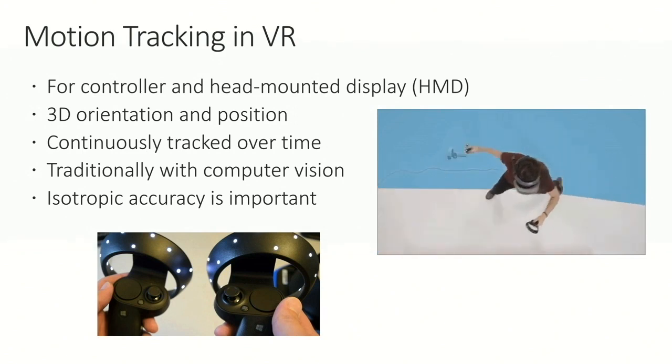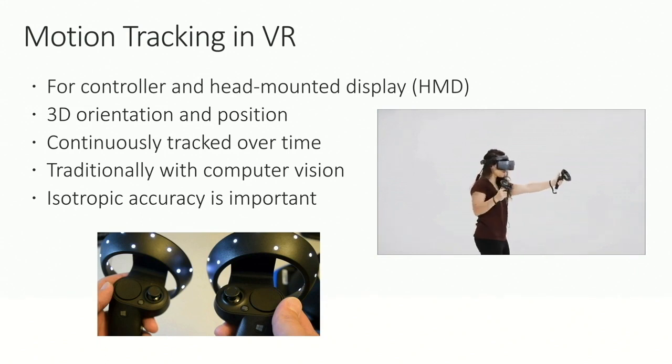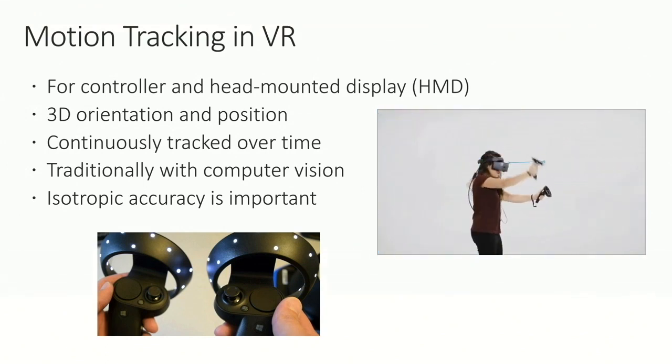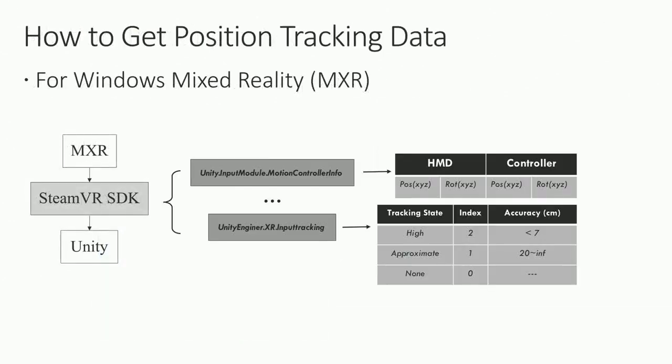Isotropic accuracy is very important. The traditional way to track those devices is based on computer vision, simply using the front camera located at the headset. We built the system based on mixed reality. The way we get position tracking data is to utilize the SteamVR SDK, which allows developers to work with mixed reality VR in the Unity environment.